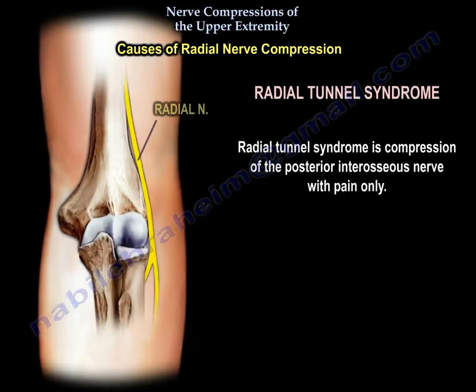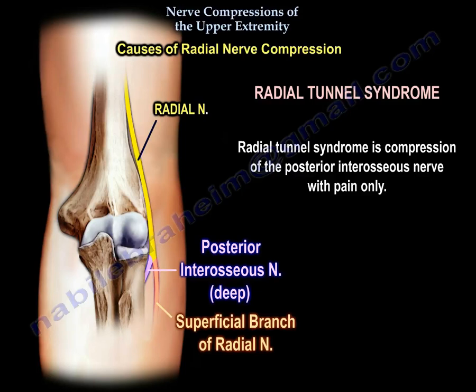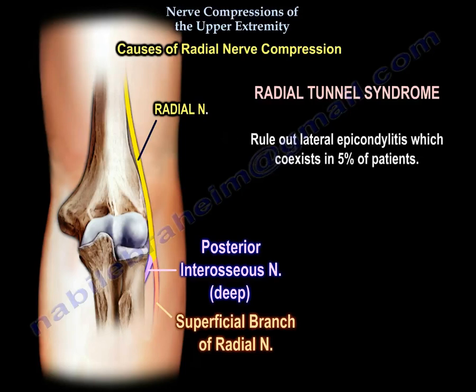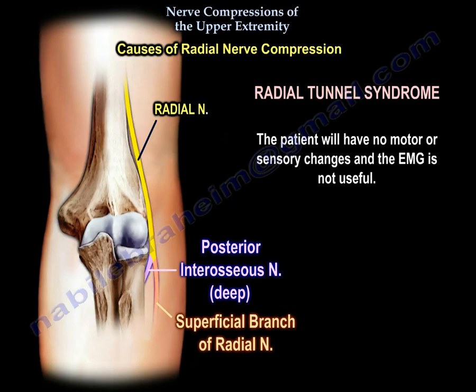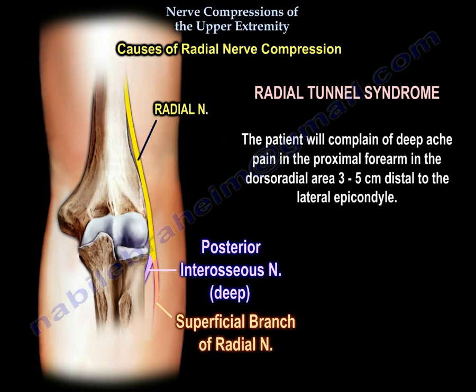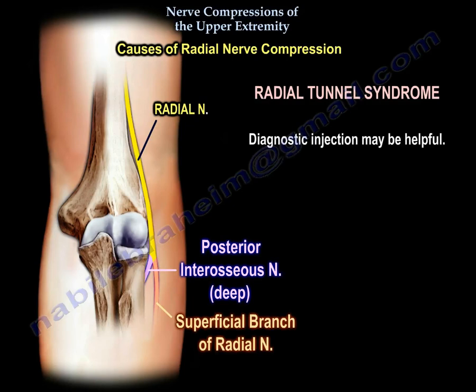Radial tunnel syndrome is compression of the posterior interosseous nerve with pain only. Rule out lateral epicondylitis — it co-exists in 5% of patients. The patient will have no motor or sensory changes and EMG is not useful. The patient will complain of deep aching pain in the proximal forearm in the dorsal radial area, 3 to 5 cm distal to the lateral epicondyle. Diagnostic injection may be helpful.